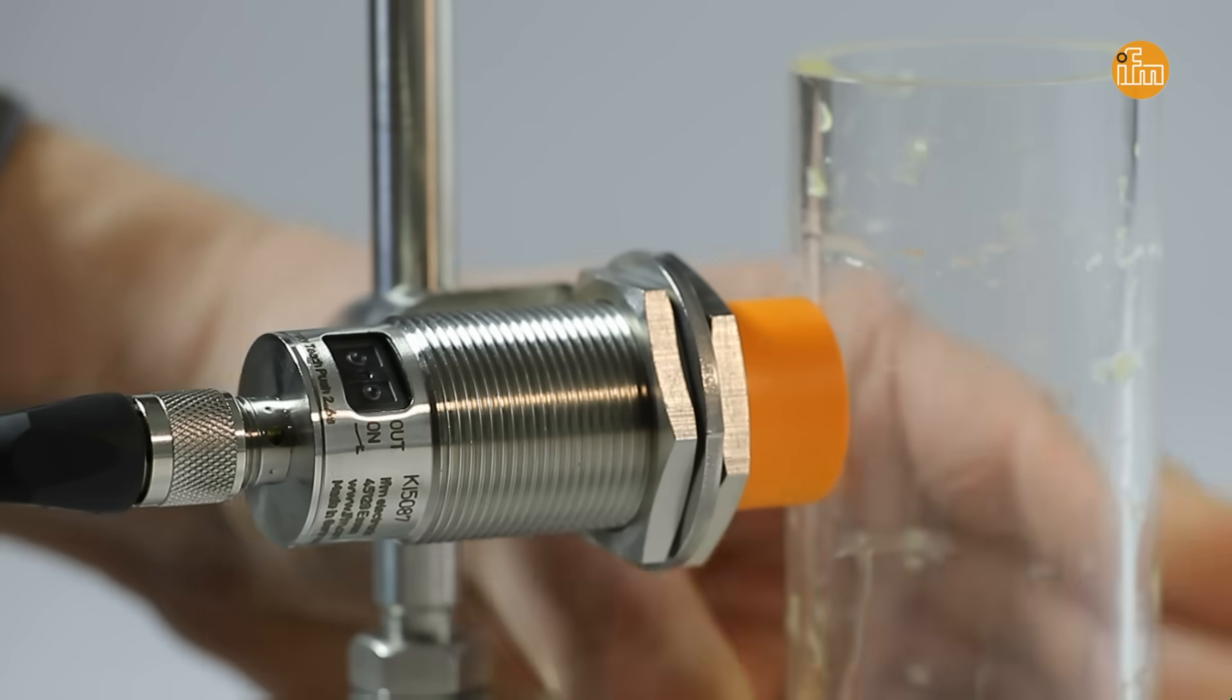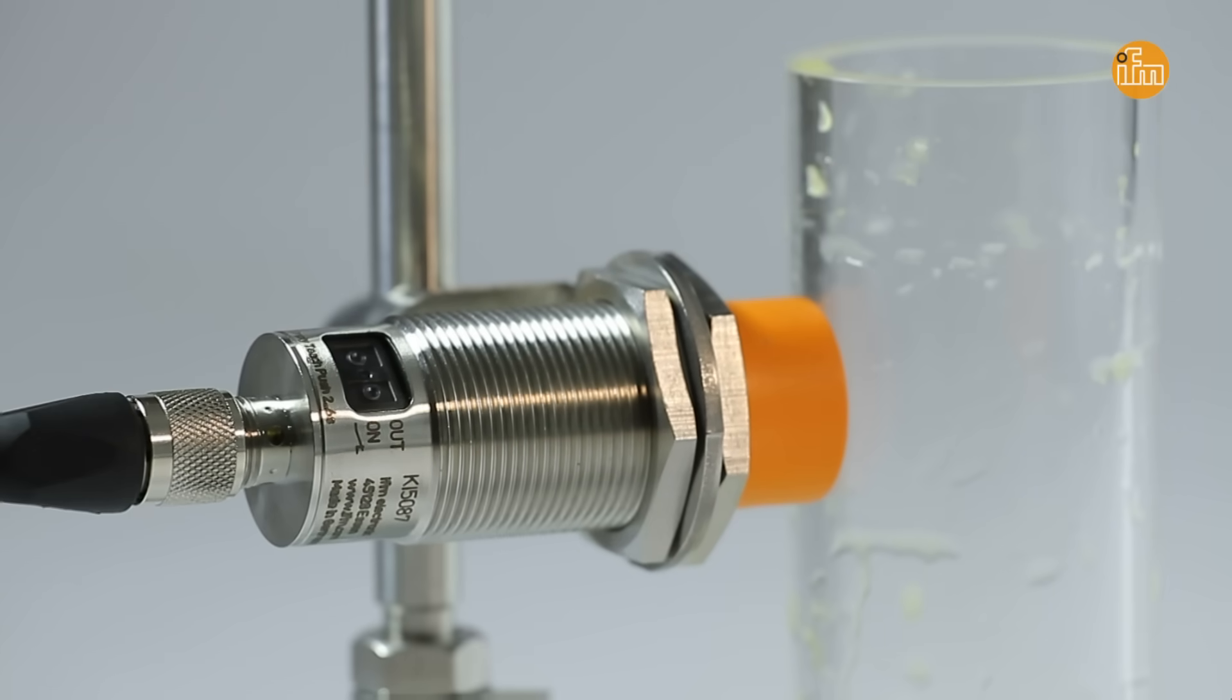We see that the sensor has suppressed the residues of the orange juice by means of the electronic adjustment and switches off.